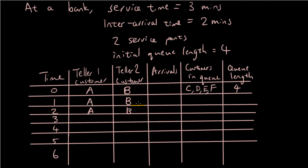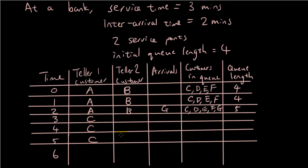So now what's going to happen is after two minutes the next customer is going to arrive. So we've got C, D, E, F still waiting in the queue, so queue length is four. But once G arrives, there's going to be five people in the queue. And now it only takes three minutes, so customer A is gone. We put the next person on, which will be customer C, and C will be there for three minutes. Customer B is gone, so we can put the next person on — that's customer D, on for three minutes.